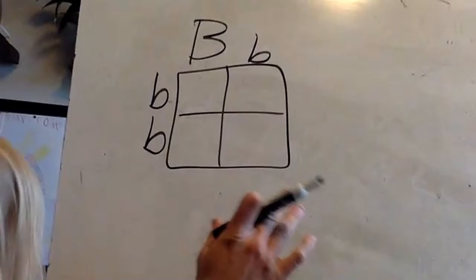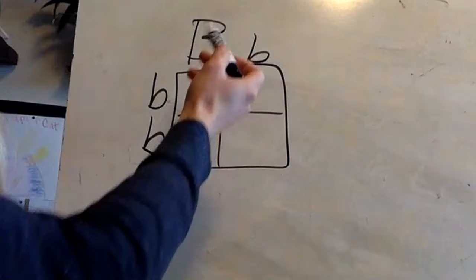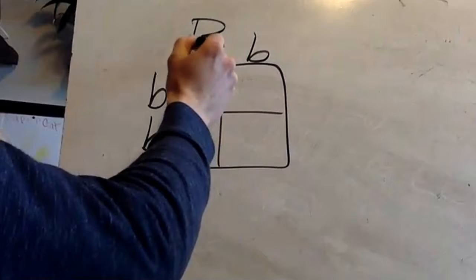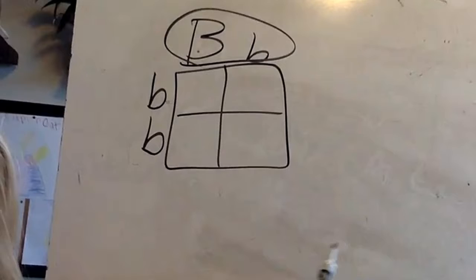In normal inheritance, what we've done in the past involves dominant and recessive alleles. The big capital letter is dominant and it covers up everything the lowercase ones do. So if this was black and this was white, the black covers up the white.